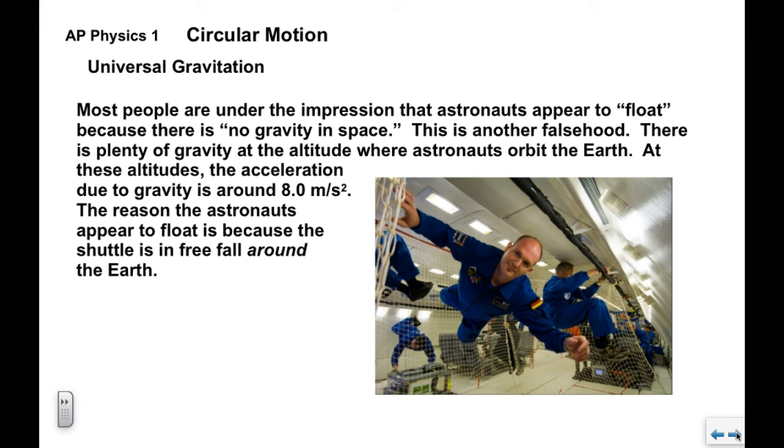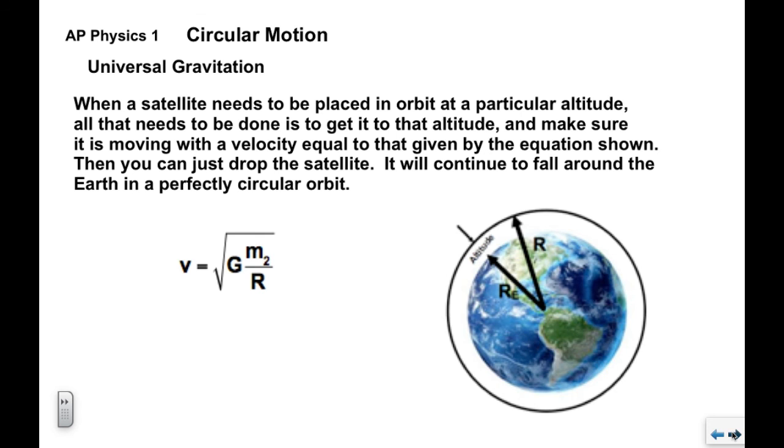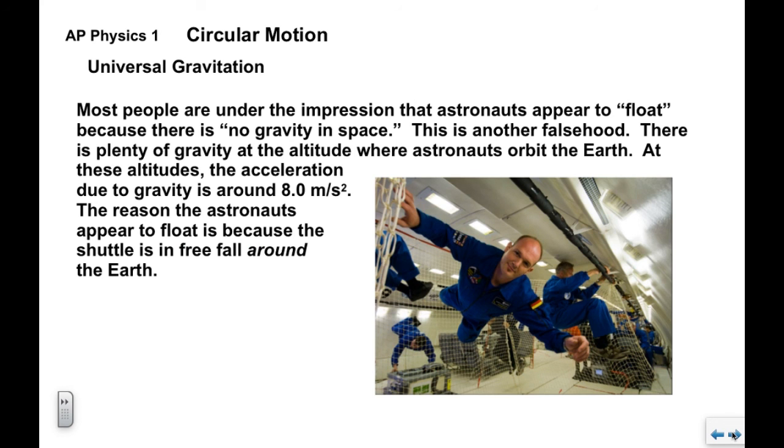There's plenty of gravity at the altitudes where we put astronauts and have them orbit the Earth. There's plenty of gravity at the space shuttle mission altitudes. Gravity is around 8 meters per second squared, not that much less than 9.8. The reason they appear to float around like there's no gravity is because the space shuttle itself is falling around the Earth, just like our satellite from the previous picture. The space shuttle is a couple hundred miles up and it's literally falling around the Earth. The whole thing is in free fall including the astronauts inside it, so they appear to be weightless because the whole thing is actually falling.